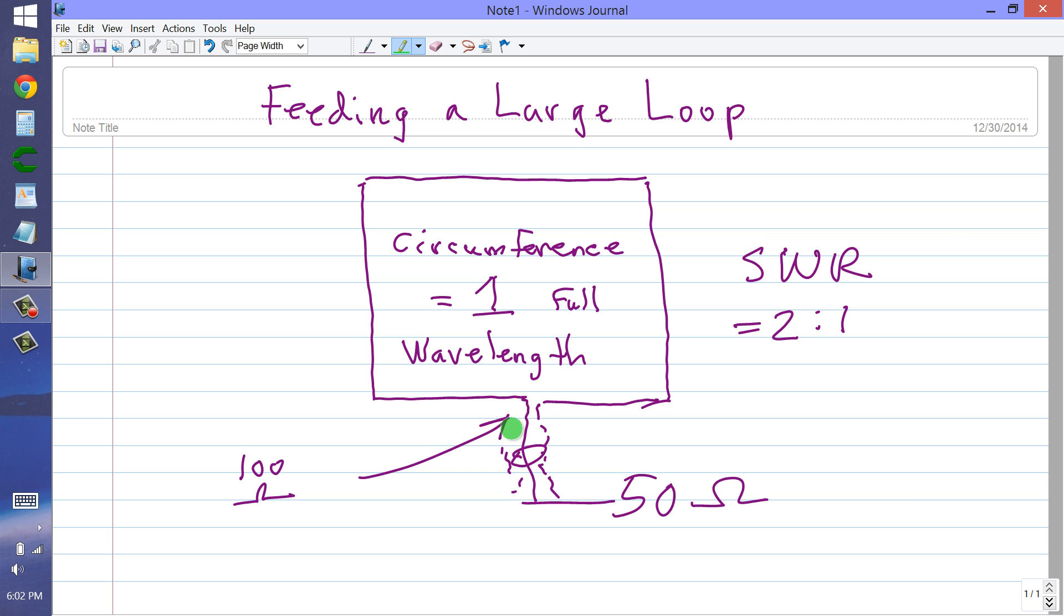then regardless of how long your feed line is, how much loss it has, the SWR of 2 to 1 will not increase the loss in that line appreciably with respect to a perfect match.